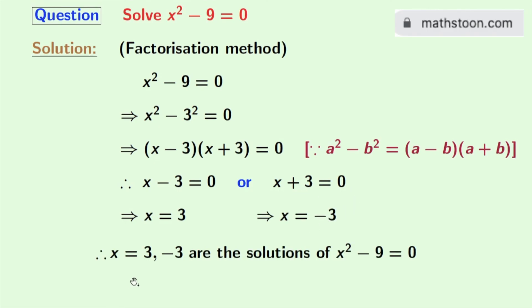So x = 3 and -3 are the solutions of this equation x² - 9 = 0.